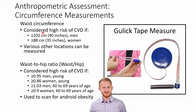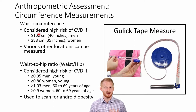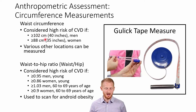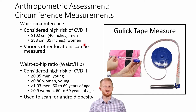The waist measurement, which is done on the abdomen most commonly, is considered elevated — meaning the person is at elevated risk of cardiovascular disease — at the following cut points. For men, equal to or greater than 102 centimeters or 40 inches puts them in the elevated risk category. For women, equal to or greater than 88 centimeters or 35 inches also puts them in the elevated cardiovascular disease risk category.